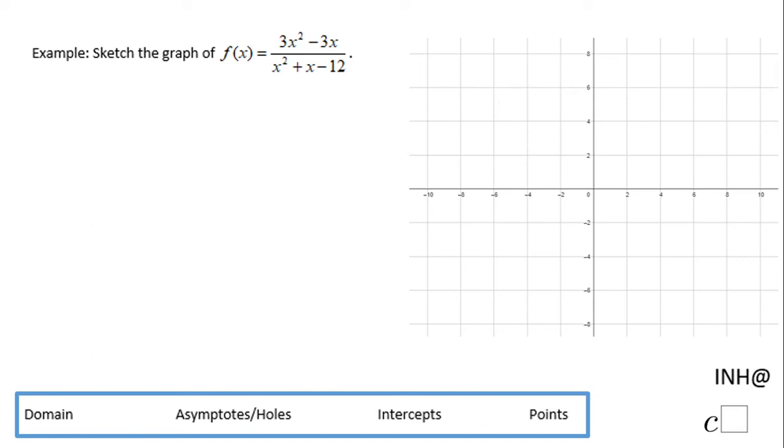Welcome or welcome back to I Need Help at C Square. In this example we need to sketch a graph of this rational function. The first thing I notice is this rational function has two polynomials, the numerator and the denominator that can be factored. So sometimes you want to do that.